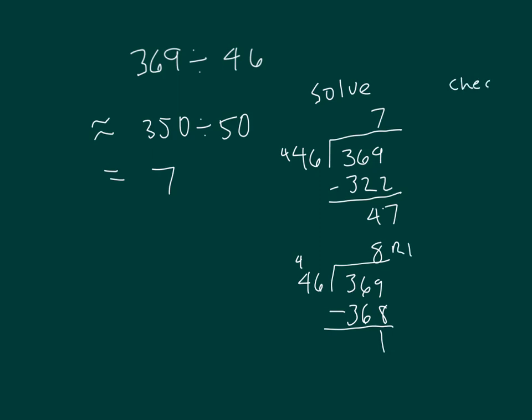Our check is 46 multiplied by 8: 8 times 6 is 48, regroup of 4. 8 times 4 is 32, plus 4 is 36. Add back in the 1, and I get 369. So our solution is 8 with a remainder of 1.